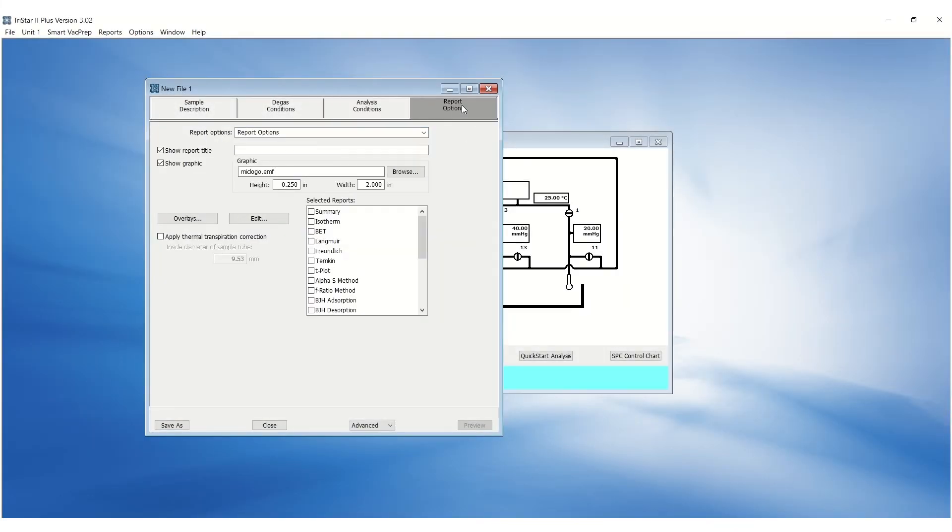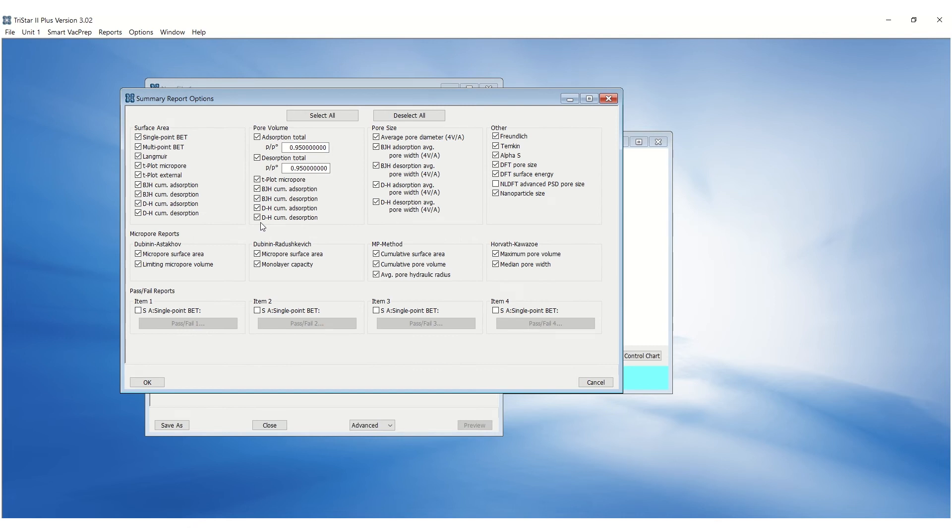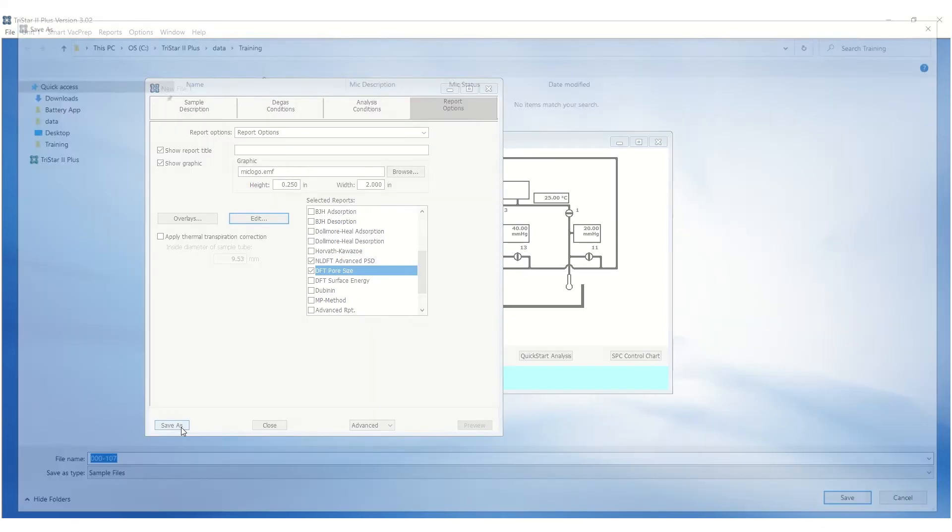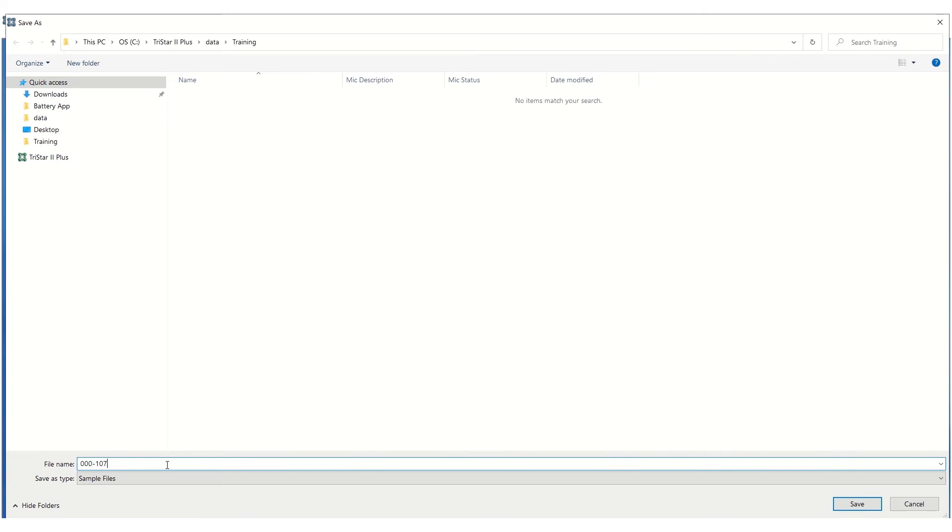Reports can be selected in the reports tab. Check and highlight Summary and click Edit. Deselect all and check DFT Pore Size and NLDFT Advanced Pore Size. Click OK to save. Also select Isotherm, NLDFT Advanced PSD and DFT Pore Size. After creating a sample file, click Save As, enter the desired name, and Save.